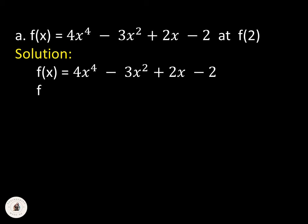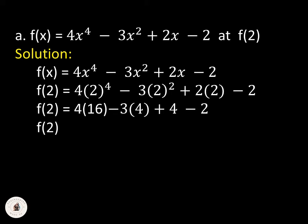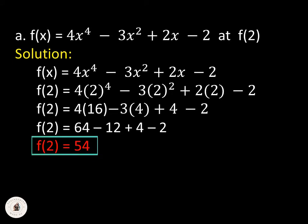Substituting 2 for x, we have f(2) = 4(2)⁴ - 3(2)² + 2(2) - 2. This gives us f(2) = 4(16) - 3(4) + 4 - 2, which equals 64 - 12 + 4 - 2. Therefore, f(2) = 54.